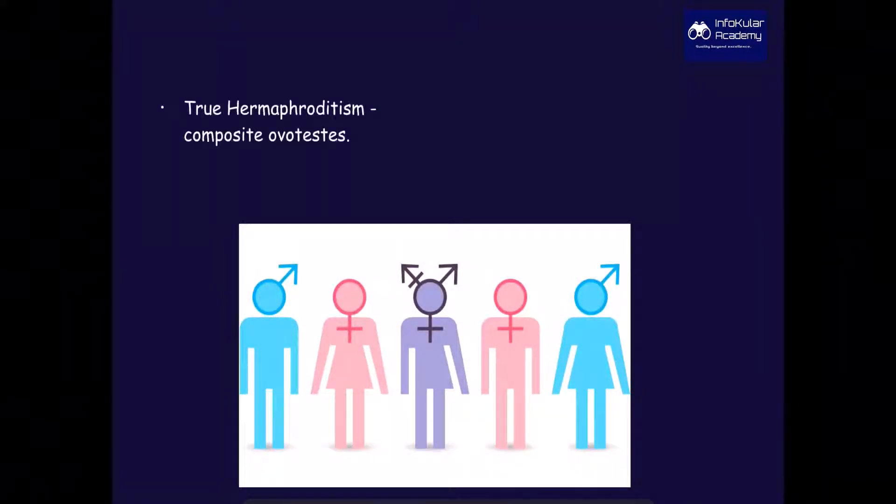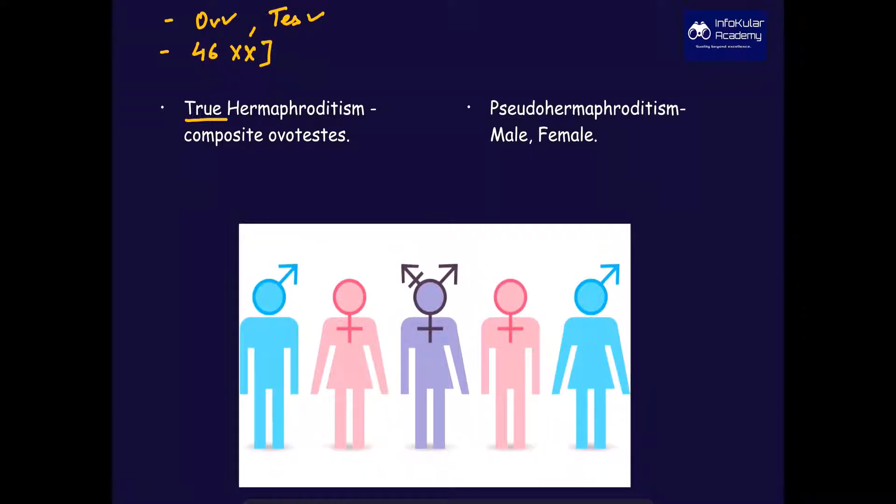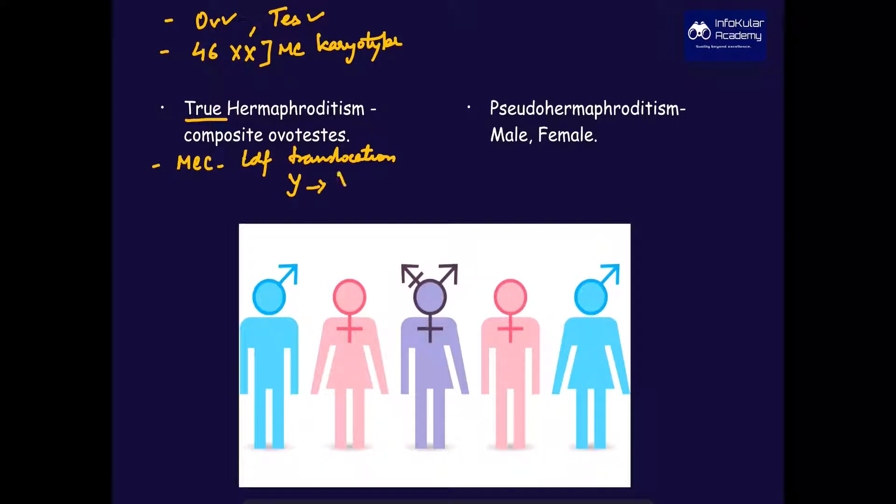Hermaphrodites are of two types. True hermaphrodites show presence of ovaries and testes together. If ovaries are on the left side, then testes are on the right side. 46,XX is the most common karyotype associated, and the most common cause is TDF translocation from chromosome Y to chromosome X.